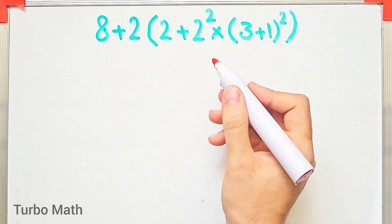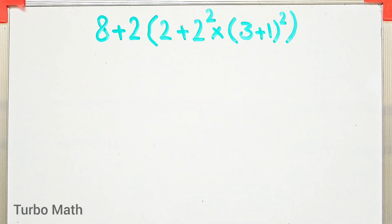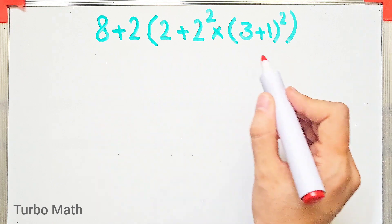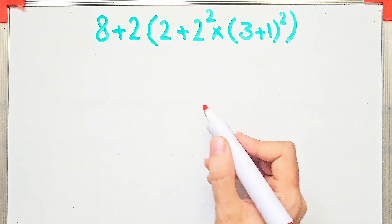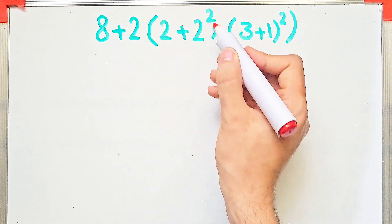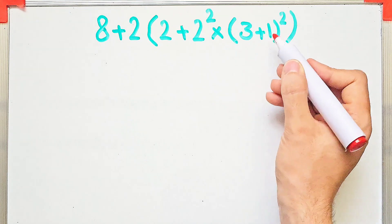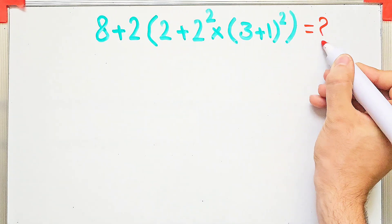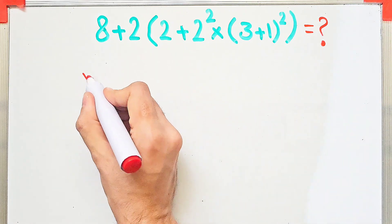Hi friends, welcome to Turbo Mass channel. A lot of people get confused when they see this question — they don't know which operation to do first, so they might get it wrong. The question is: 8 plus 2, then times 2 plus 2 to the power of 2, times open parenthesis 3 plus 1 close parenthesis, then all of them to the power of 2. What is the answer?